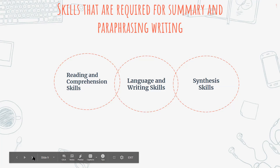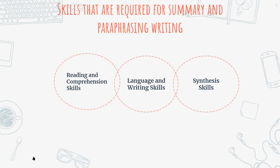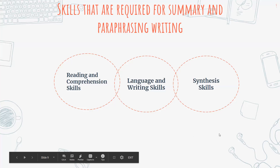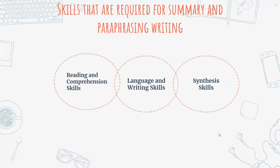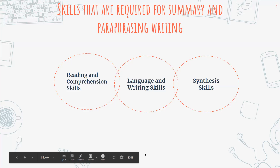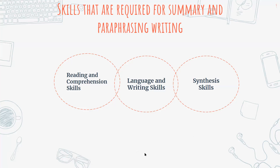Let's look at some of the skills required for summary and paraphrasing. Reading and comprehension skills are very important. Even before you begin to write your summary, you need to practice your reading and comprehension skills. One of the comprehension skills you can practice is identifying the things that you do not understand. If there are sections of the text that are not clear to you, highlight or underline that section and try to gain more clarity — either by looking for context clues in the piece of writing or by doing some additional reading on that specific aspect.